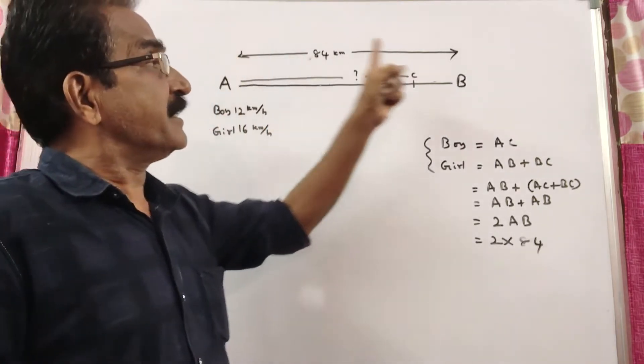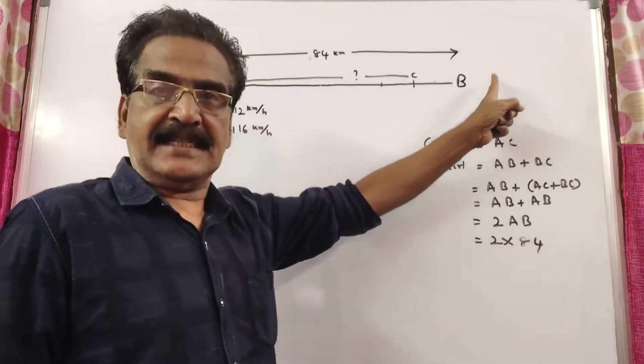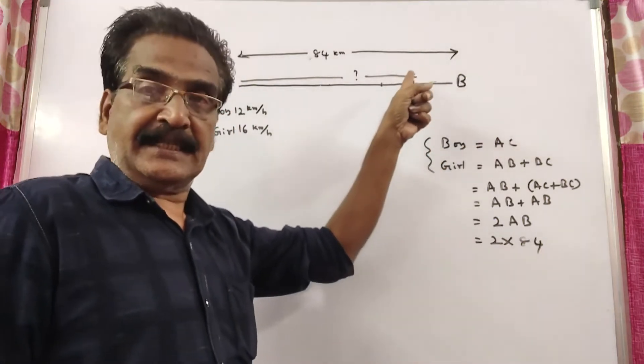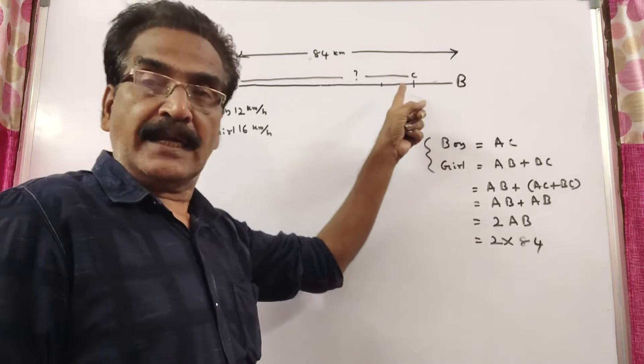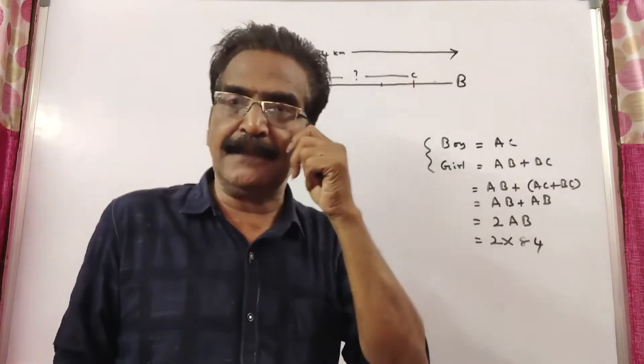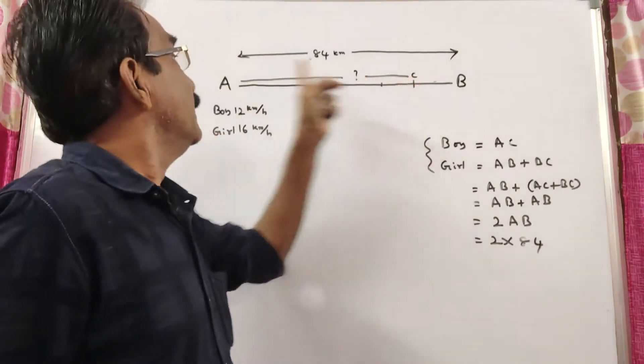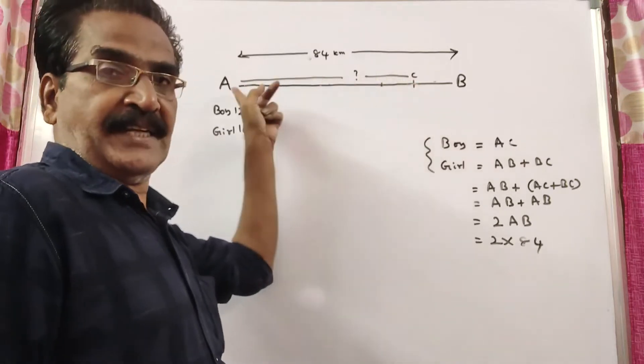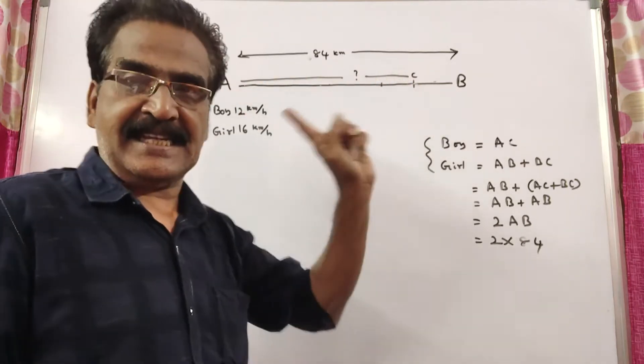The girl reaches first and immediately returns towards A and meets the boy at another point C. We want to find the distance between A and C.